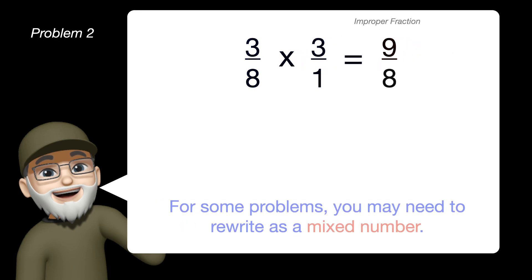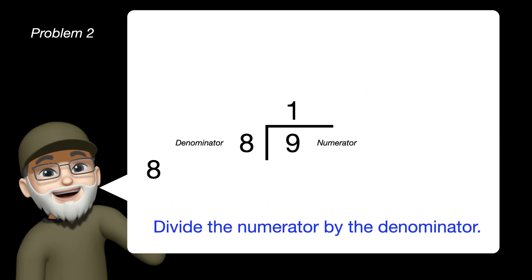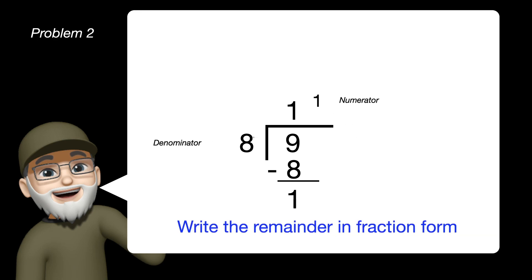That gives us 9 over 8, which is an improper fraction. For problems like this, we will need to rewrite them as a mixed number, so there's one more step. We divide the numerator by the denominator. When you do that, you'll get 1 with a remainder of 1, which we rewrite as a fraction because we're dealing with a mixed number answer.